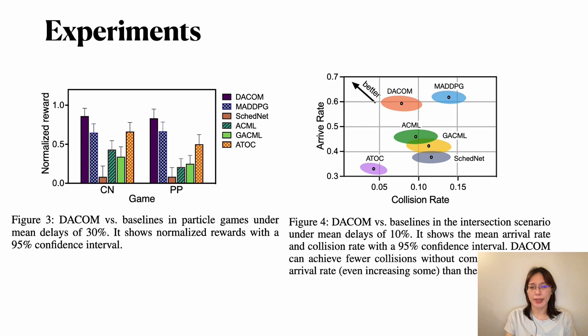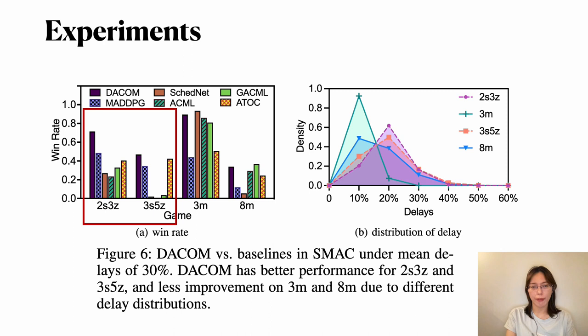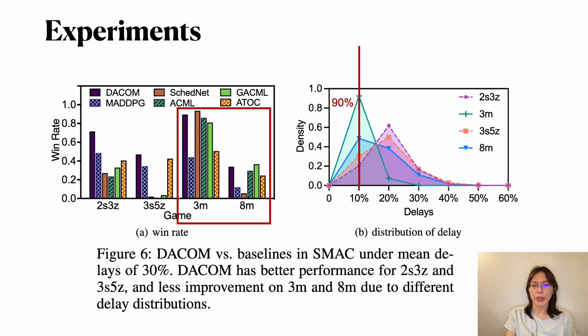From the experiment, we can see that DACOM has better performance in the predator games and also for traffic control with lower collision and higher reward rate than the others. And for Starcraft 2, it's more complex. For the first two, DACOM is better. However, the last two, one is not that obvious. We analyzed the reason. Because the last two games, the agents prefer to stand closer, which means the delays are more or less. Like that, more than 90% of the delays are slower than one time step, which means that delays can be ignored.